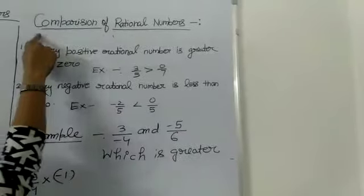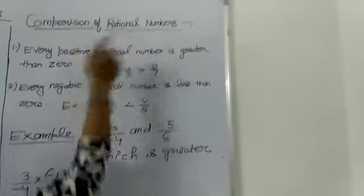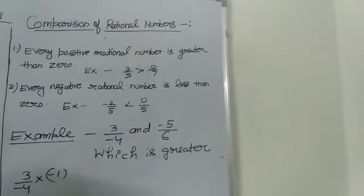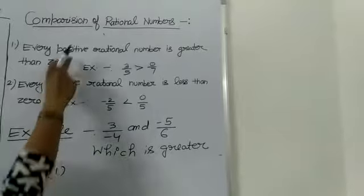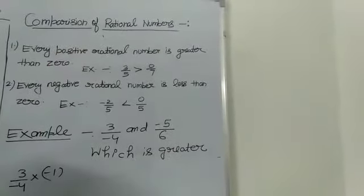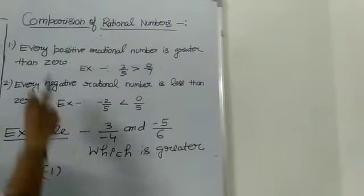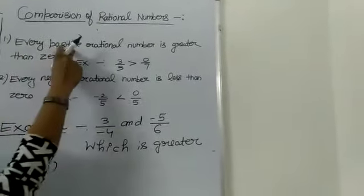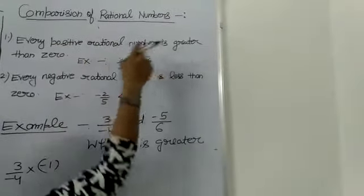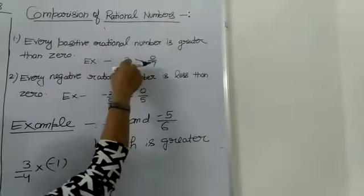Our next topic is the comparison of rational numbers. As you all know, all the positive numbers are greater than 0. Similarly, every positive rational number will be greater than 0.